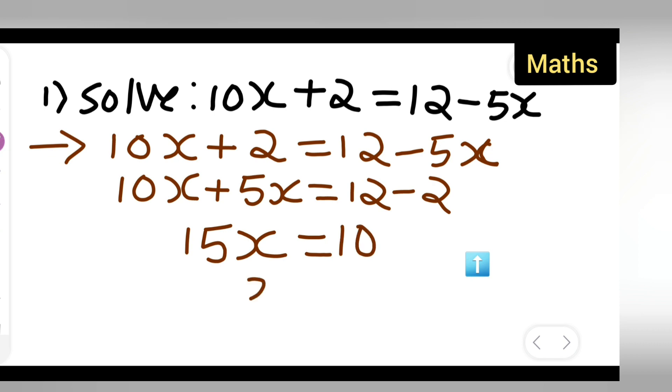Now your answer is x is equal to 10 upon 15. So 5 times 3 is 15, 5 times 2 is 10. So therefore you can say that the value of x is equal to 2 upon 3.